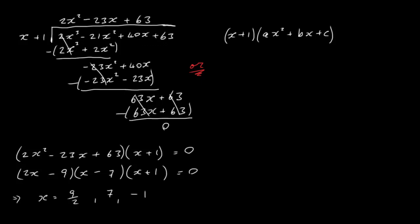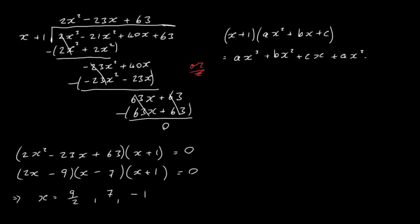Expanding x plus 1 times ax squared plus bx plus c: multiplying by x gives ax cubed plus bx squared plus cx, and multiplying by 1 gives ax squared plus bx plus c. Collecting like terms gives ax cubed, plus a plus b times x squared, plus b plus c times x, plus c.